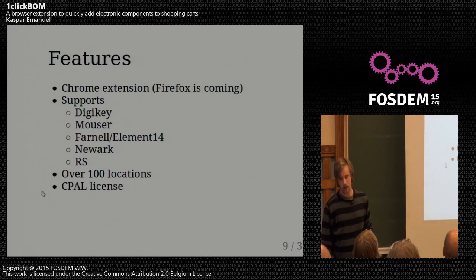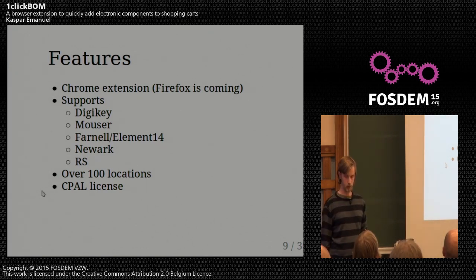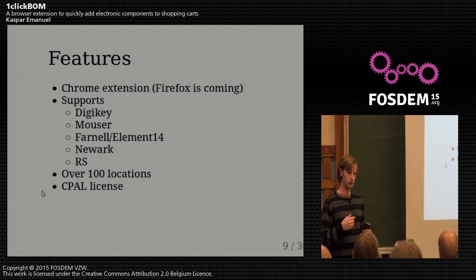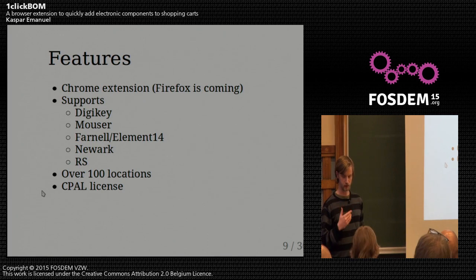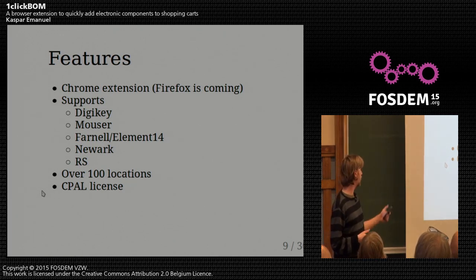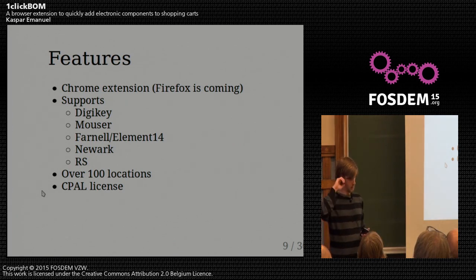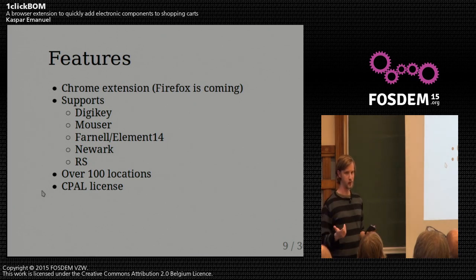The current features are: it's a Chrome extension, and I'm currently working on a Firefox port. It supports these retailers listed there in over 100 locations — you set what country you're in and it chooses the right retailer website depending on that. I've used a CPAL license, which is maybe a little controversial, but it's a Free Software Foundation endorsed license and OSI approved. I'm the sole contributor anyway, so if you've got a problem with the license, I'm probably willing to re-license it.